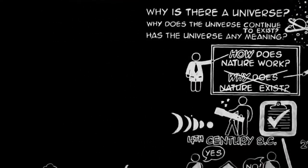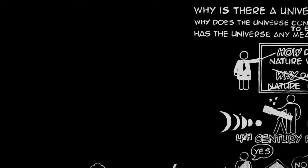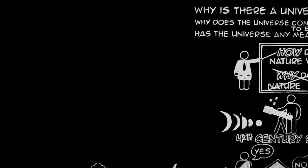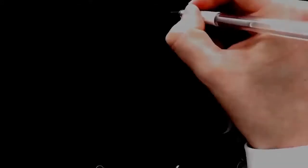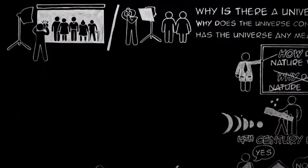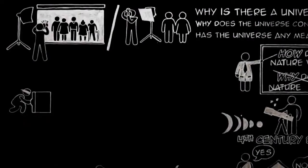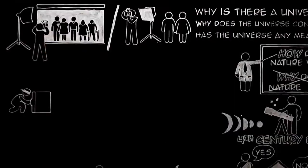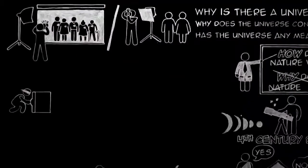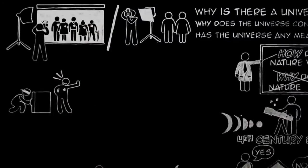Now, the position would be quite hopeless but for this. There is one thing, and only one, in the whole universe which we know more about than we could learn from external observation. That one thing is man. We do not merely observe men, we are men. In this case, we have, so to speak, inside information. We are in the know. And because of that, we know that men find themselves under a moral law, which they did not make, and cannot quite forget, even when they try, and which they know they ought to obey.